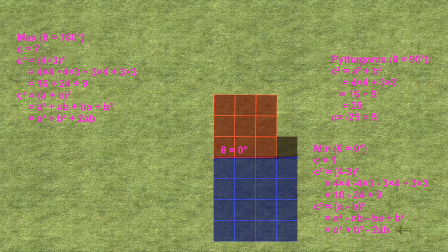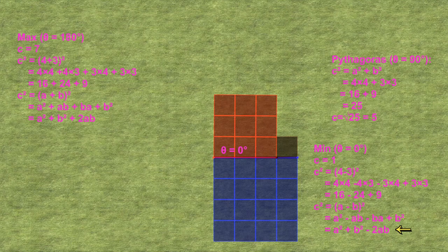For side lengths in general, we have c squared equal to a minus b squared, which can be expanded as a squared plus b squared, this time minus 2 times a times b.